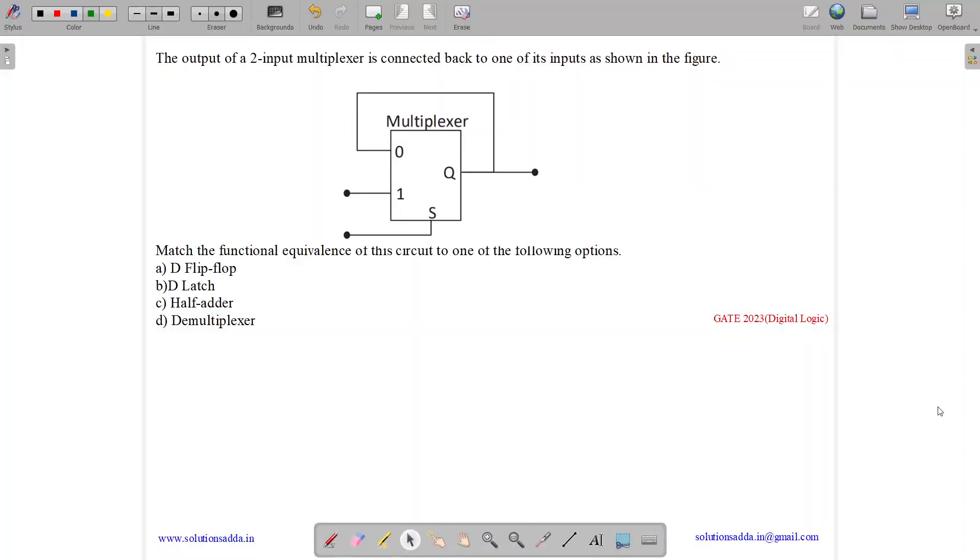This question belongs to digital logic subject and was asked in GATE CSE 2023. The question states the output of a two input multiplexer is connected back to one of its inputs as shown in the figure. Match the following equivalence of this circuit to one of the following options.